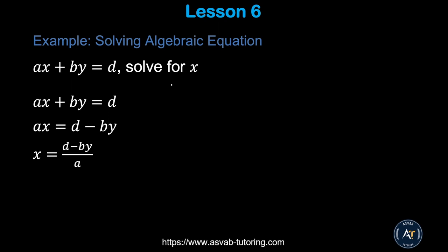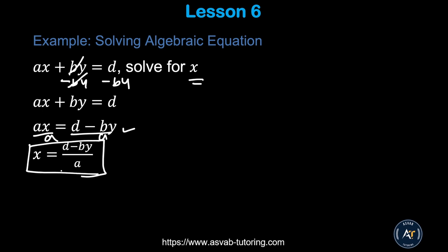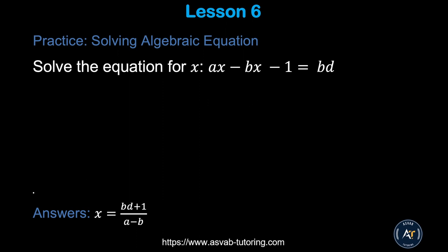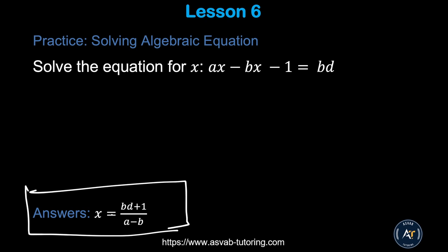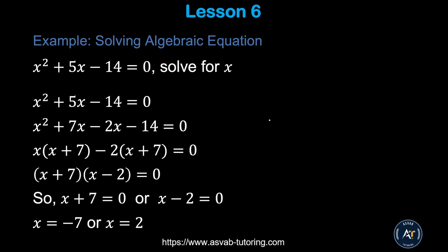Some equations have only letter variables and no numbers — students often get confused, but it's straightforward. To solve for x in an equation like ax + by = d: subtract by from both sides to get ax = d − by, then divide both sides by a to get x = (d − by) / a. Try the practice problem and verify your answer.